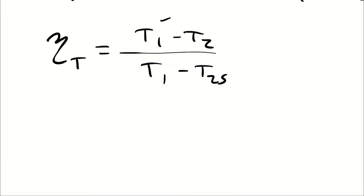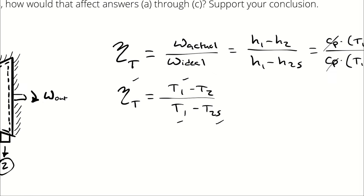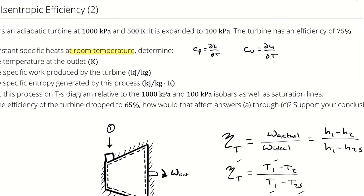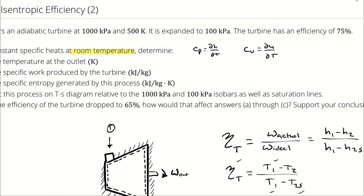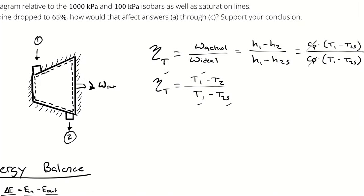I know T1, I can figure out T2S, and then I will have delta T. So T1 is 500 Kelvin.